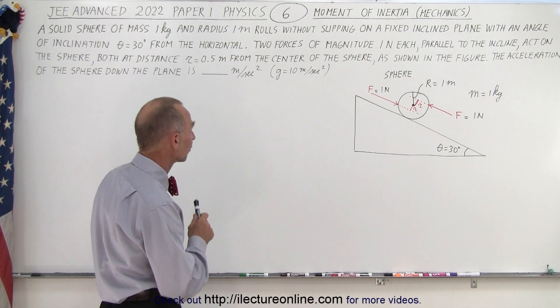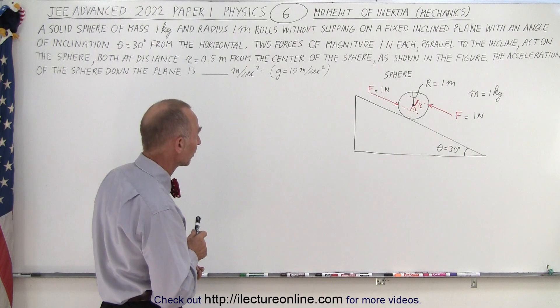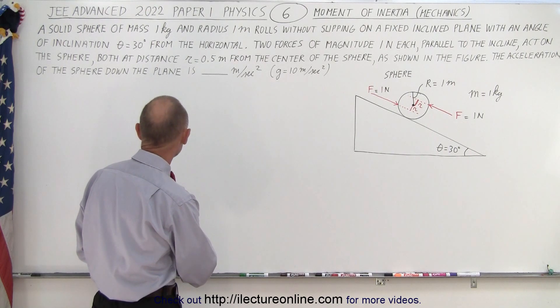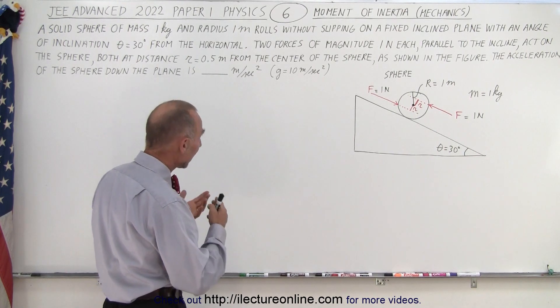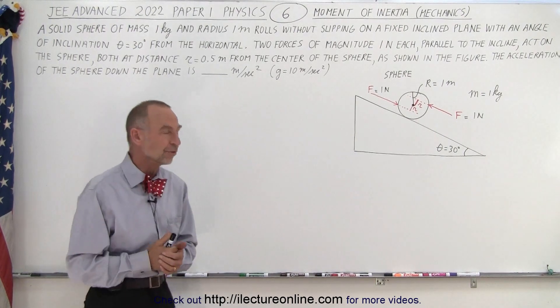r being 0.5 m from the center of the sphere, as shown in the figure. The acceleration of the sphere down the plane is, and we take g to be 10 m per second squared.